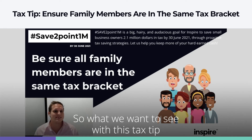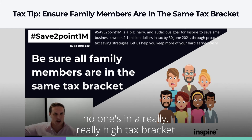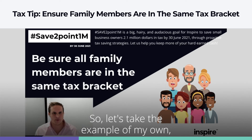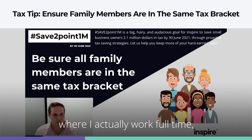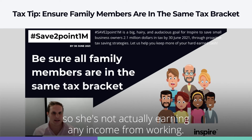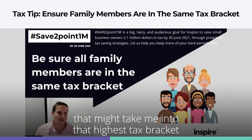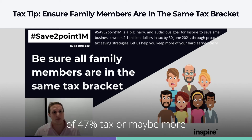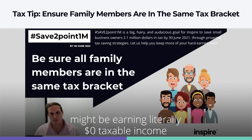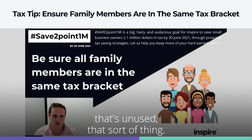What we want to see with this tax tip is that no family member is in a really high tax bracket while someone else is in a really low one. For example, in my own situation, I work full-time and my wife is on maternity leave, so she's not earning any income from working. If I distribute all the income to myself, that might push me into the highest tax bracket of 47%, while my wife with no employment income might have a tax-free threshold of $20,000 that's completely unused.